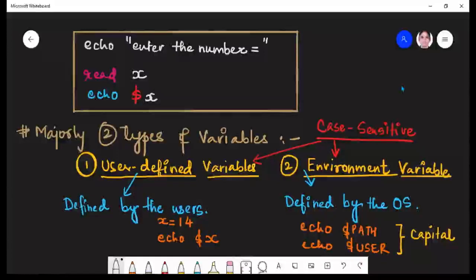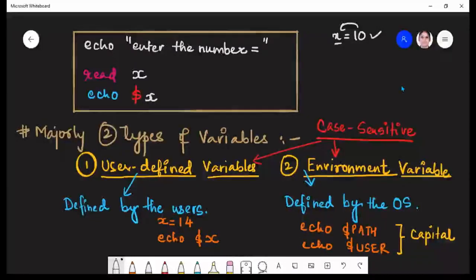Now in the previous case, we already gave the variable a value. So whenever you run the program or run the shell script and if you have given some value to the variable, it is always going to display this value. But what if you want to give the value to the variable at runtime? In that case, we will be using a command called read.